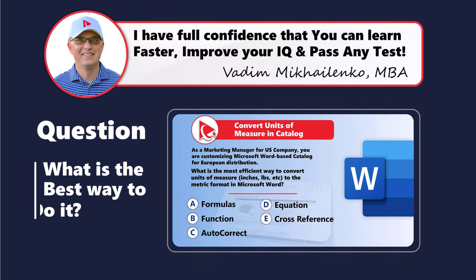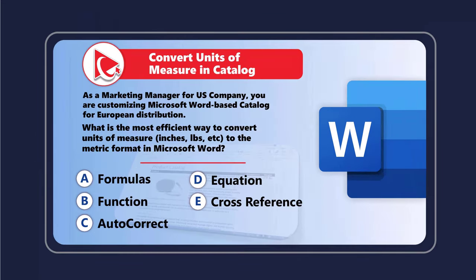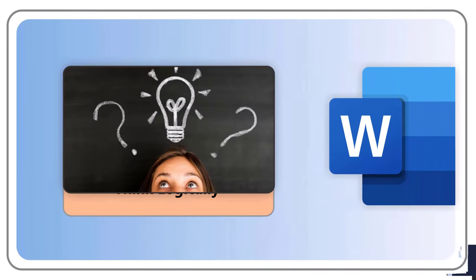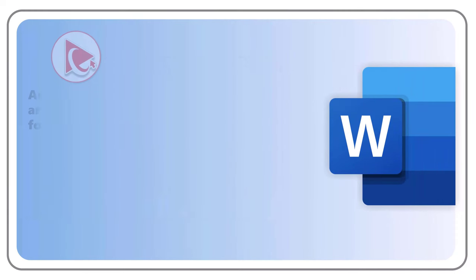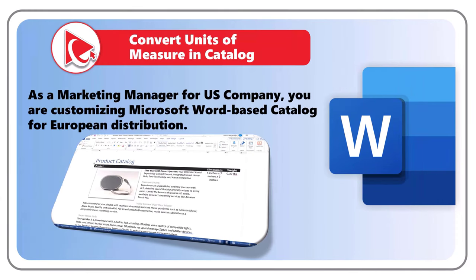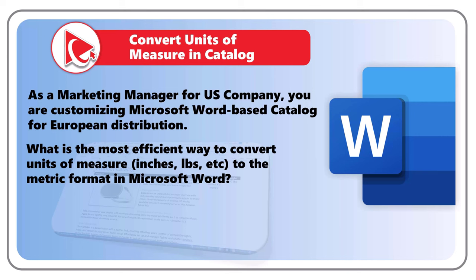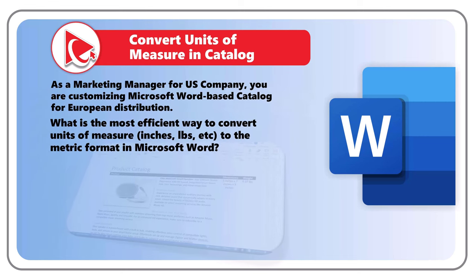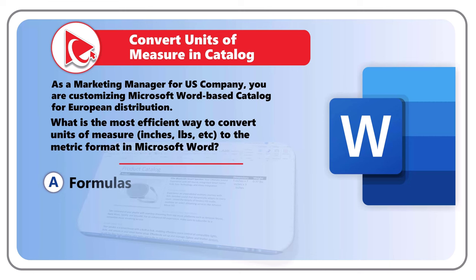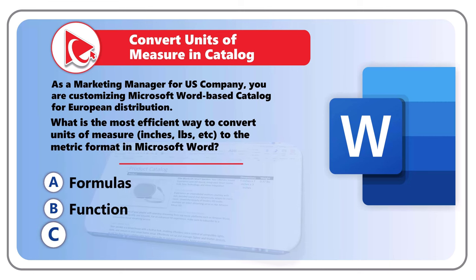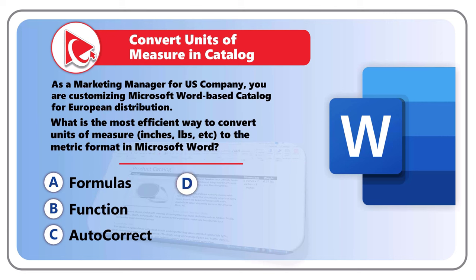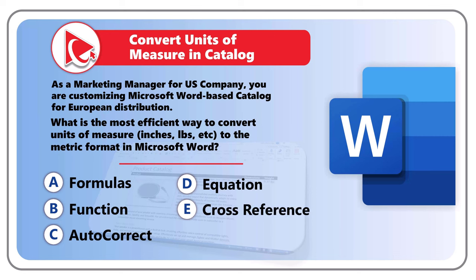Let's dive into this next captivating assessment test question. As a marketing manager for a United States-based company, you are customizing a Microsoft Word-based catalog for European distribution. What is the most efficient way to convert units of measure — like inches and pounds — to the metric format in Microsoft Word? You are presented with five possible answers: Choice A, Formulas; Choice B, Using Functions; Choice C, Using AutoCorrect; Choice D, Equations; and Choice E, Cross-reference.